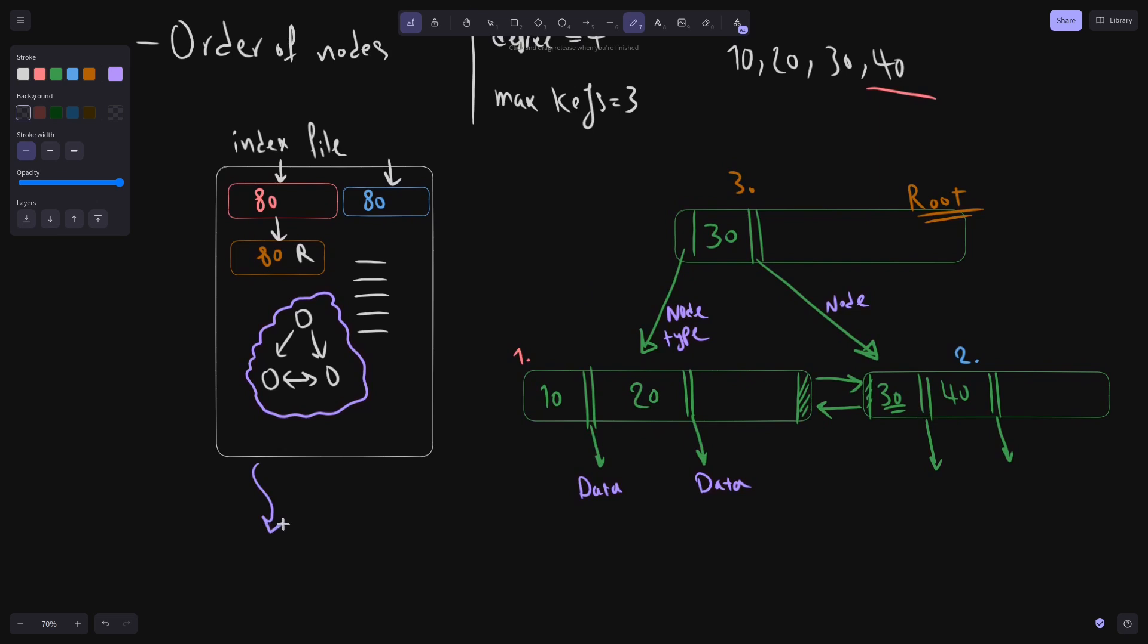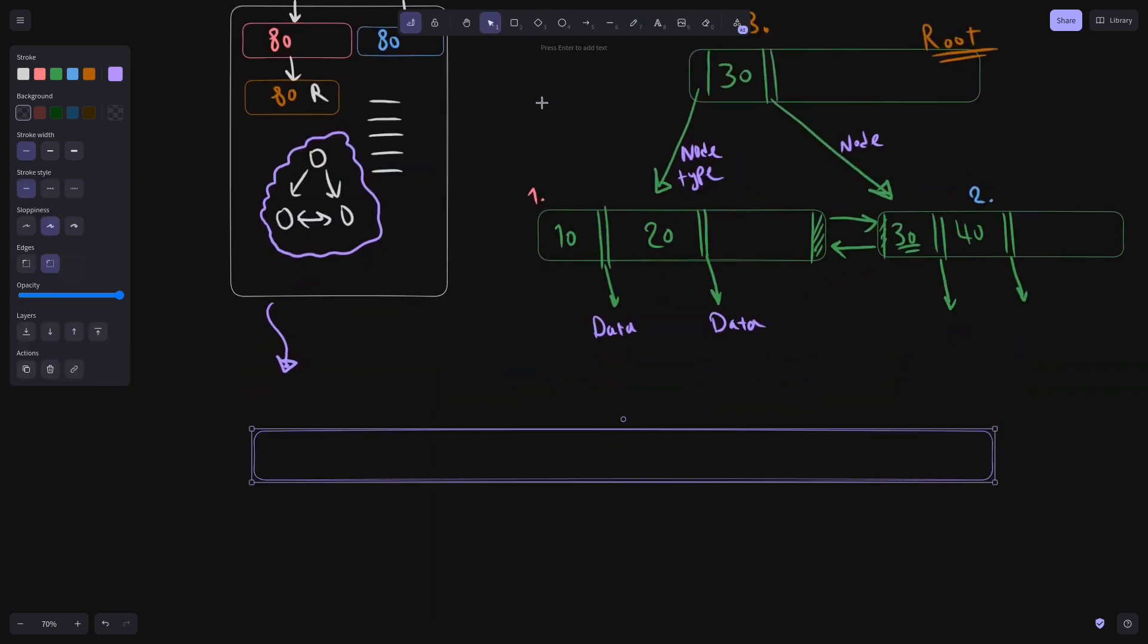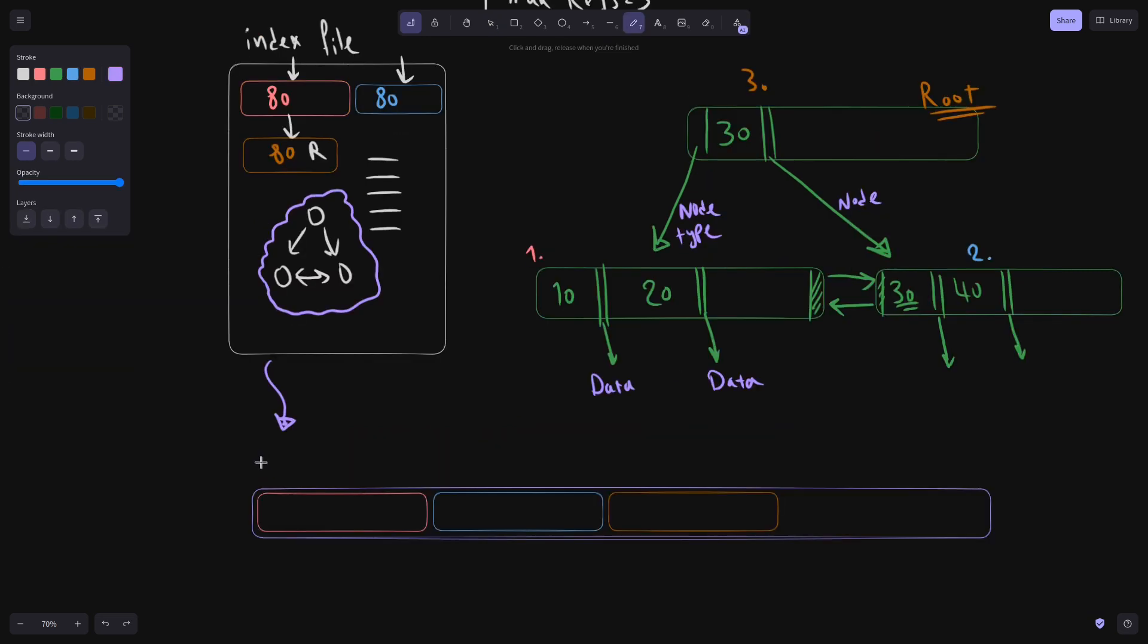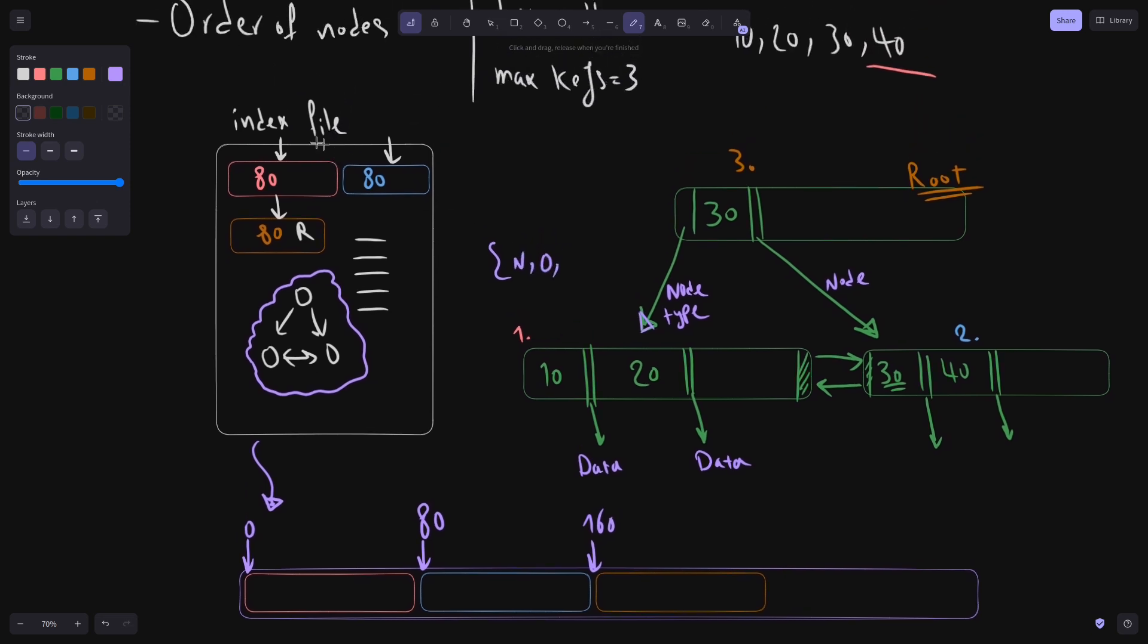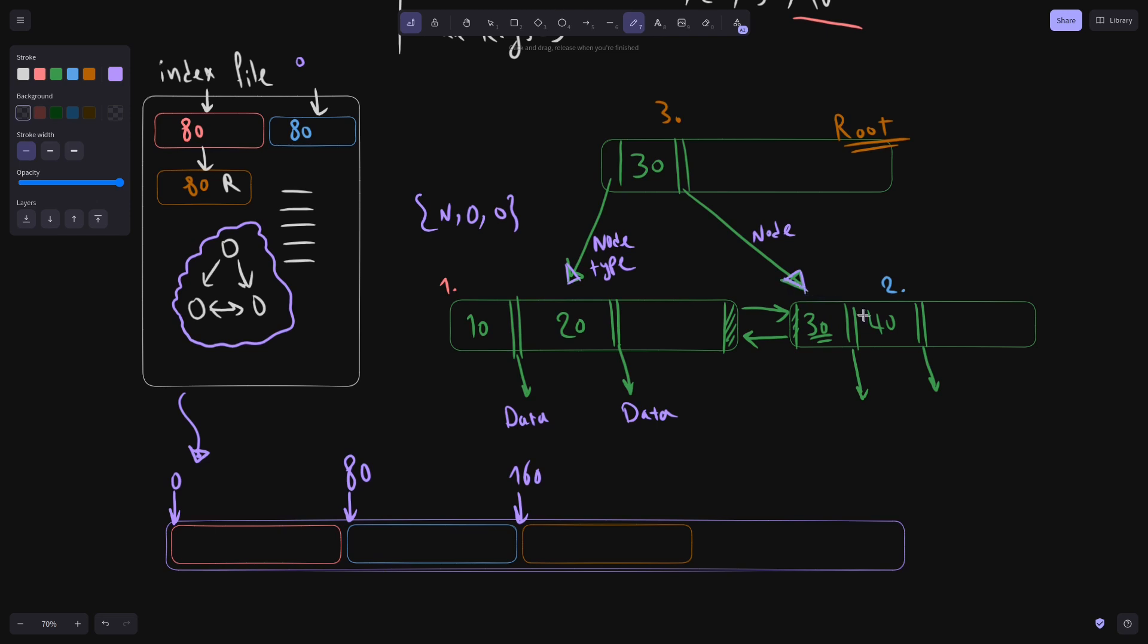But now we can understand the definition of position. If we look at this file as a flat byte array. The position of each of these nodes in this byte array looks like this. The first node starts at position 0. The second one at 80. And the next one at 160. So if you want to know how this pointer which points to the first node looks like. Again, the type is node. The position is 0. And if this is the index file of chunk 0, then the chunk is also 0.